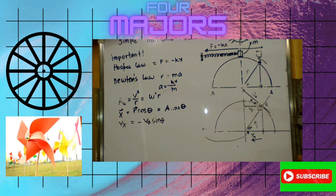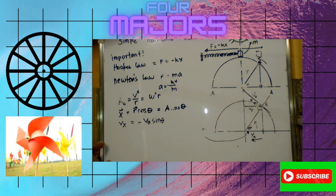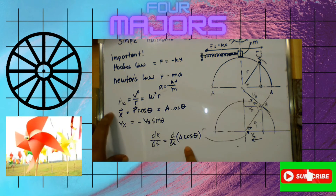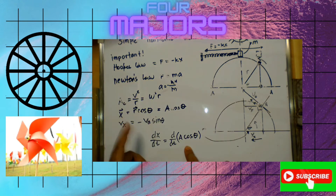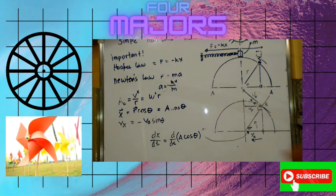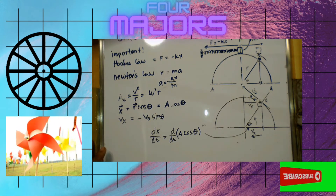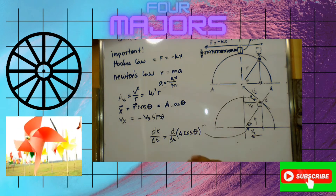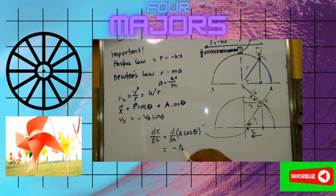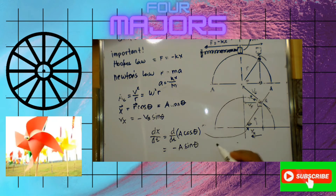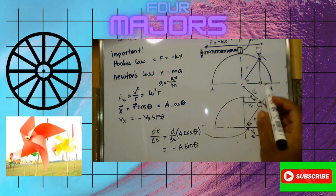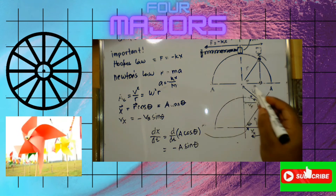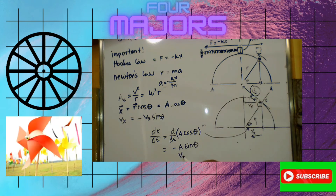If you're not convinced by the geometric derivation, we can use calculus. Since displacement x equals A cosine theta, taking dx/dt gives the velocity. The derivative of cosine theta is negative sine theta, so the velocity becomes the expected result, confirming our earlier derivation.